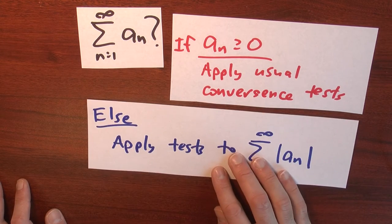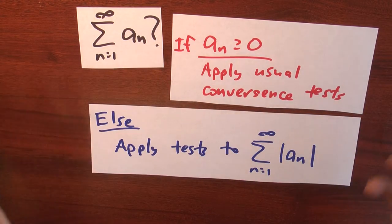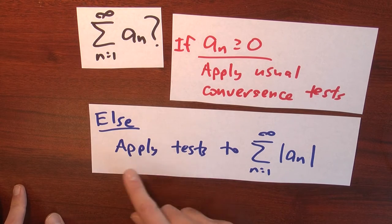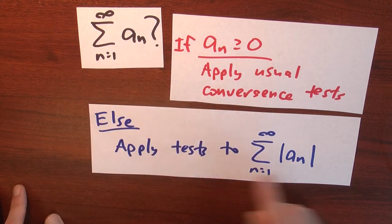But if that's not the case, if you're in a situation where some of these terms are positive, some of these terms are negative, what do you do? Well, then I'd recommend that you apply all of our old convergence tests, not to this series directly, but to this series: the sum n goes from 1 to infinity of the absolute value of the a sub n's.